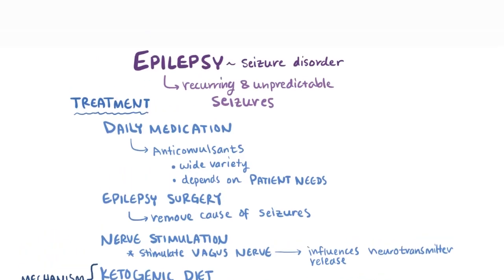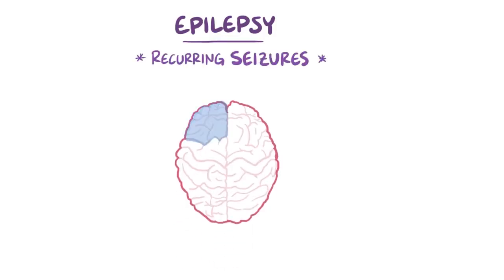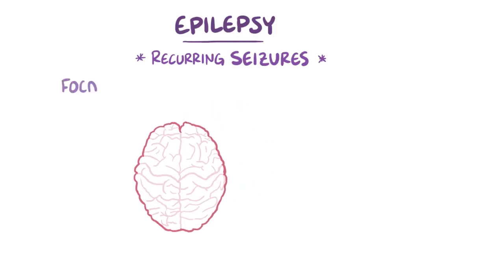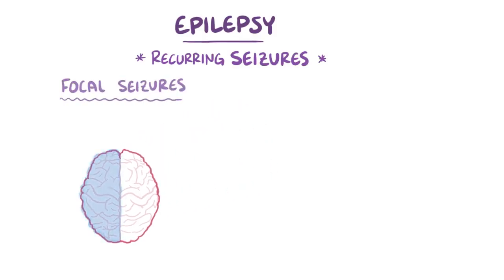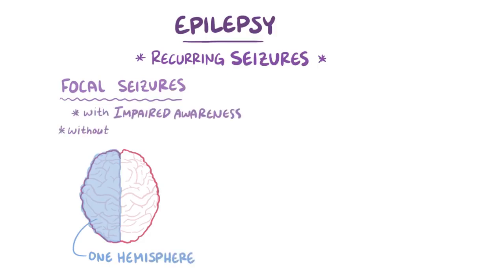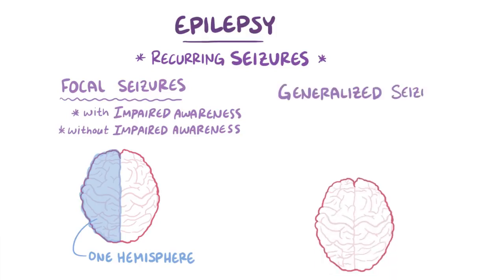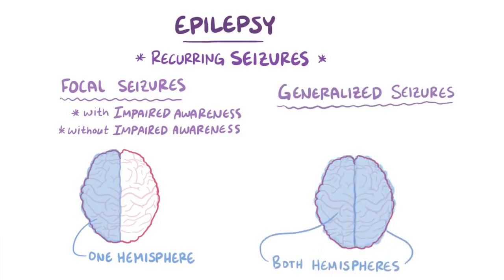As a quick recap: epilepsy is a disorder where somebody experiences recurring seizures where neurons fire over and over again. Focal seizures typically only affect one localized area of the brain, like one hemisphere, and can be split into those with impaired awareness and those without. Generalized seizures involve both hemispheres, and there are a number of subtypes, though the most common are tonic-clonic seizures.